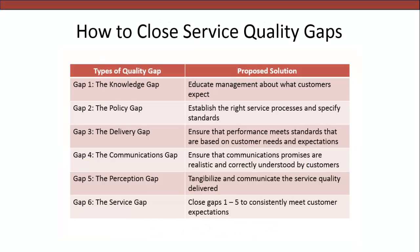First, for the Knowledge Gap, educate management about what customers expect. One way is to increase interactions between customers and management — for example, management can go and work at the front line to find out what customers want and expect. There can also be communication between frontline employees and management. Additionally, there should be an effective customer feedback system so that management can access the information found, and research should be done to find out what customers expect.